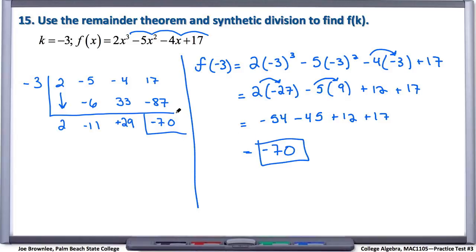Alright. So we've just confirmed through both synthetic division and plugging our k value in that we get negative 70. And so number 15, negative 70. We'll see you in a minute.